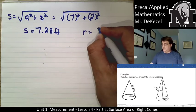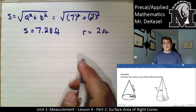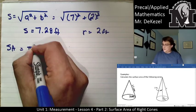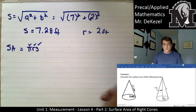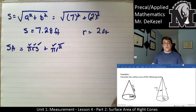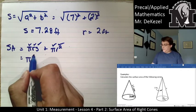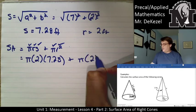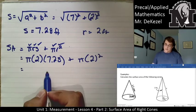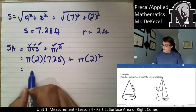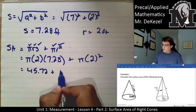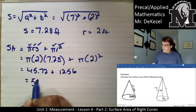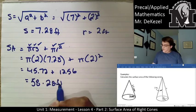Now with the slant height known as 7.28 feet and the radius as 2 feet, the surface area of the cone equals πrs plus πr². That is π times 2 times 7.28, plus π times 2 squared, which gives 45.72 plus 12.56. The surface area is 58.28 feet squared.